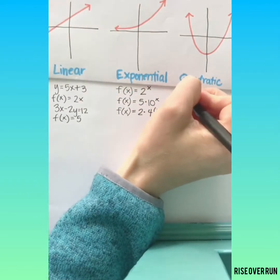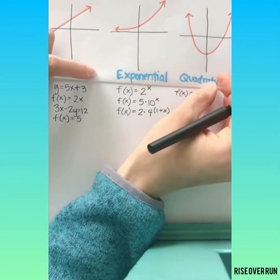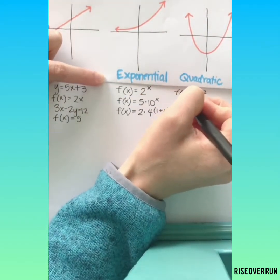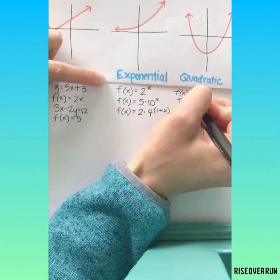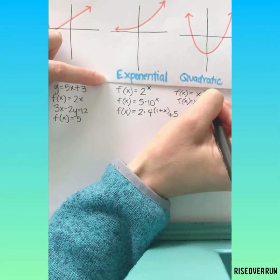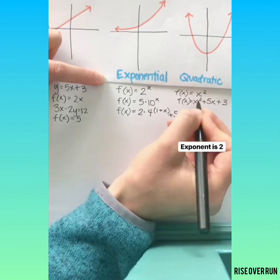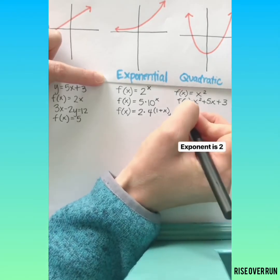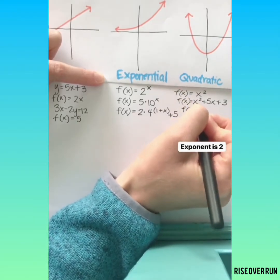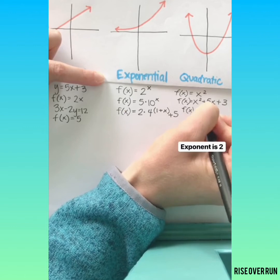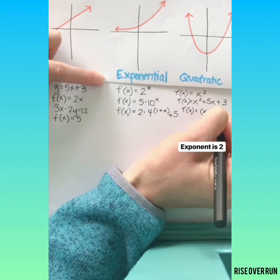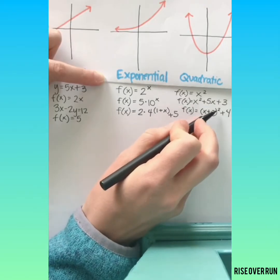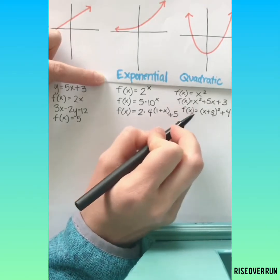Quadratic functions have an exponent of 2. That's going to be your greatest exponent. So it could just be x squared. We might have x squared plus 5x plus 3. So you could have the variable again but that largest exponent is a 2. You might see it in a factored or vertex form. But notice when you multiply that out that x will get the 2 for an exponent making it a quadratic.